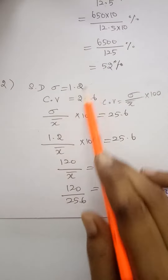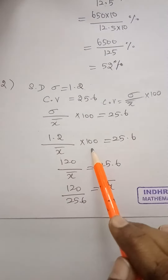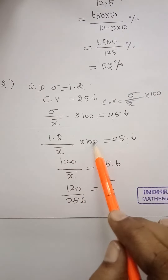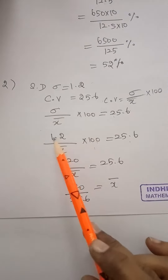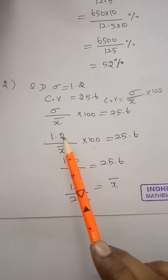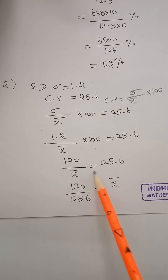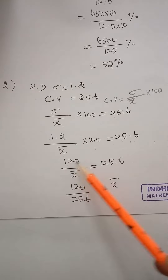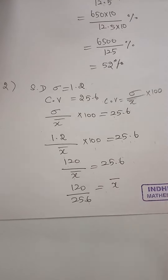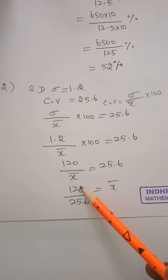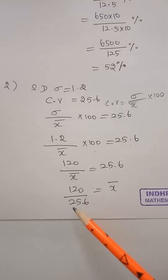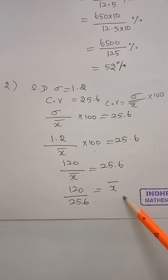Sigma is 1.2. So 1.2 divided by x bar, into 100, equals 25.6. Therefore x bar equals 1.2 into 100 divided by 25.6.